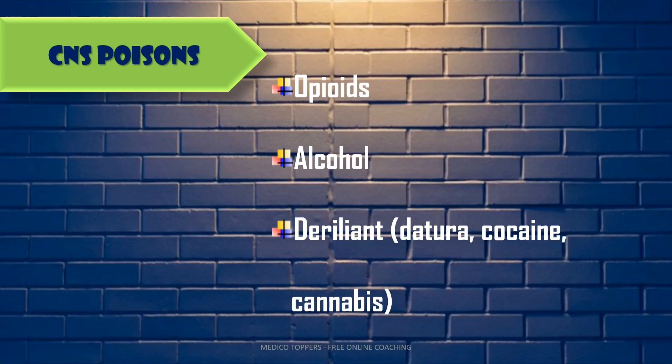Now, which are the CNS poisons? Opiates, alcohols, and delirants come under CNS poisons. Under delirants specifically: datura, cocaine, and cannabis come under delirants.